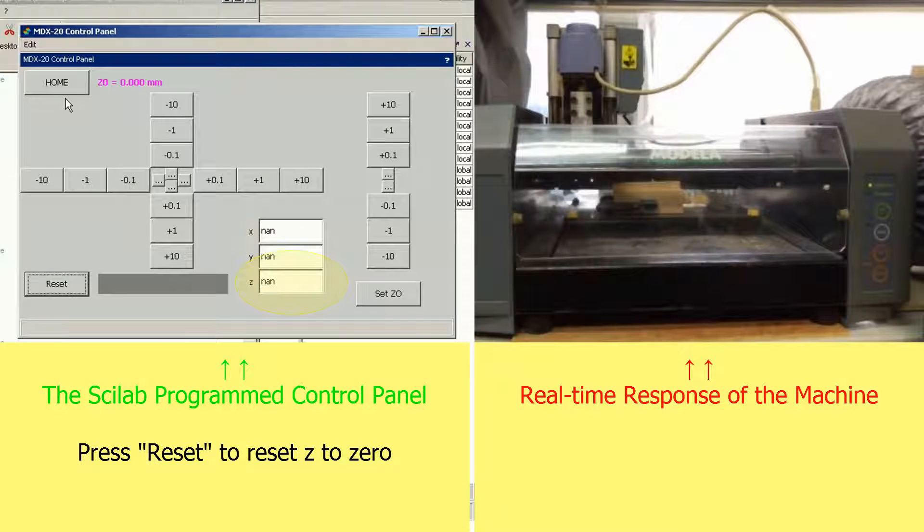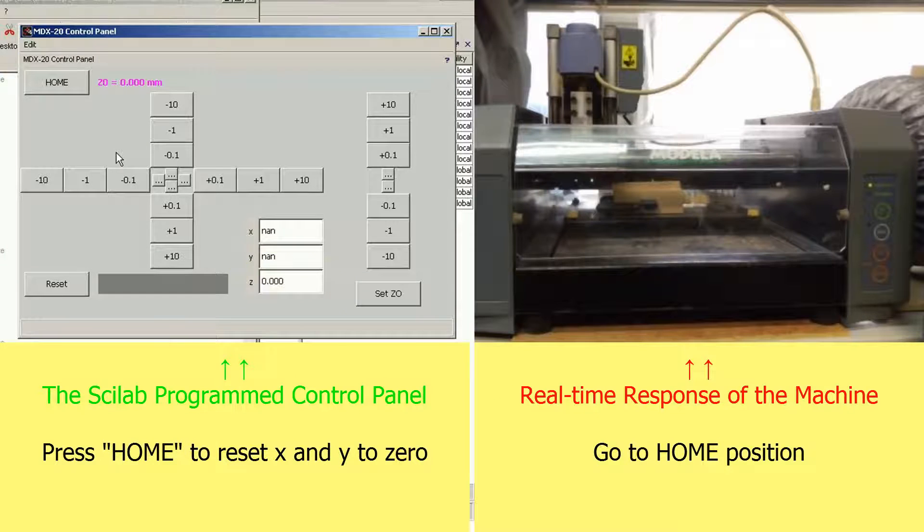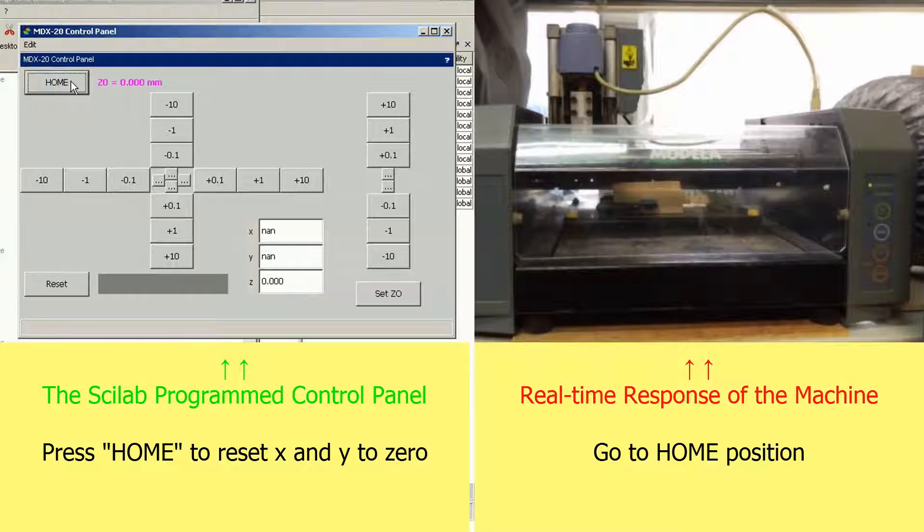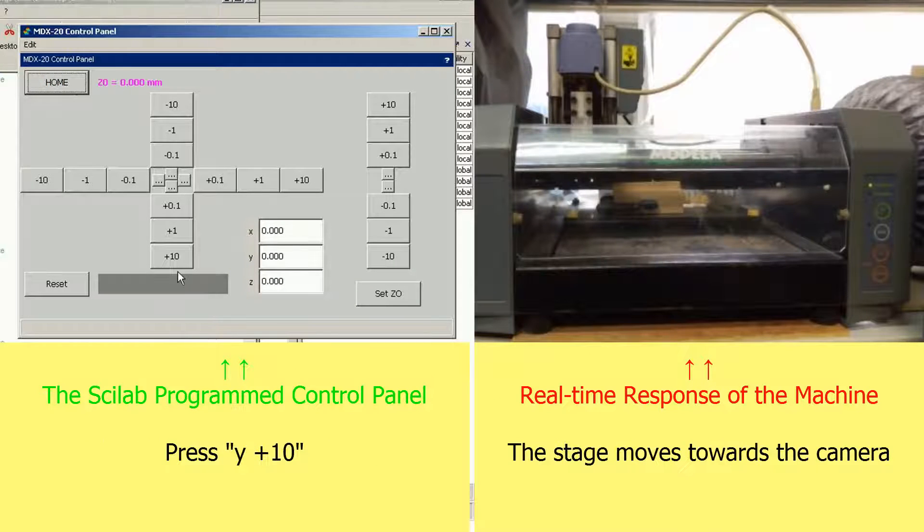So this is our panel. Press reset button after startup every time. Then press the home button to reset X, Y and Z to the zero position.